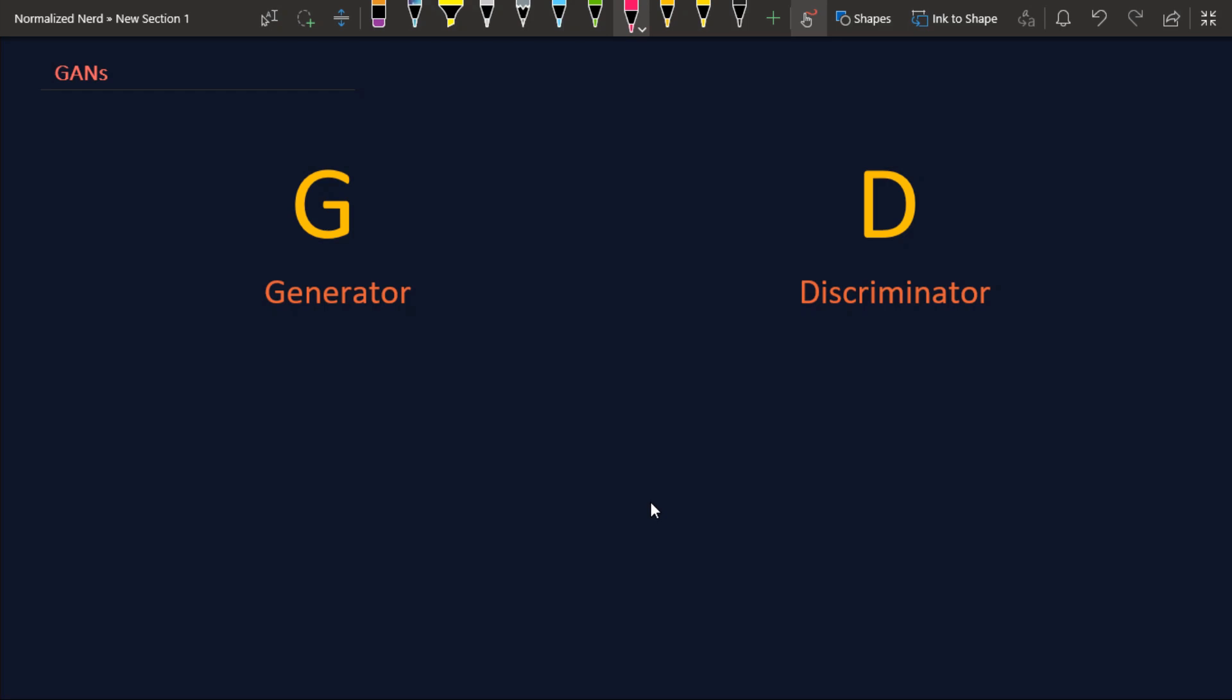Okay, the first thing that you need to know is GAN is not a single model, it's a combination of two models. The first one is a generative model called G and the second one is a discriminative model called D. Now what the hell are discriminative and generative models? Well in machine learning we have two main methods for building predictive models.